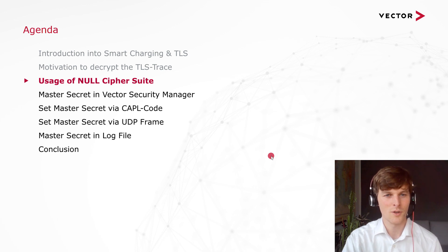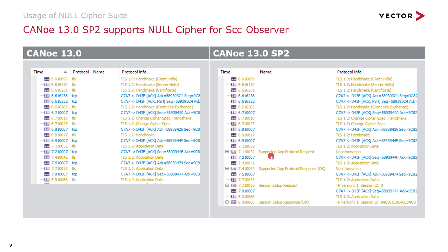How do you use the null cipher suite? As already mentioned, both sides — the electric vehicle and the charging station — have to provide null cipher support and agree to it in the TLS handshake. You will then see the messages, including SLAC, upper protocol call, and session setup. This feature has been supported since CANoe 13 Service Pack 2, so some of you may already be using it.